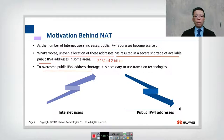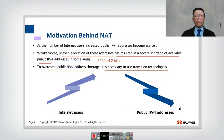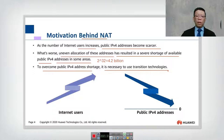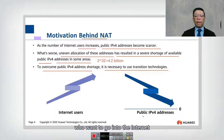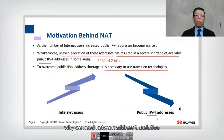The motivation here is to overcome the public IPv4 address shortage. It is necessary to use a transition technology. We also have IPv6, but we are not going to look into IPv6 at this moment because the majority of us are still on IPv4. Internet users who want to go to the internet need to use IPv4, and we are running out — that is the motivation behind why we need Network Address Translation.